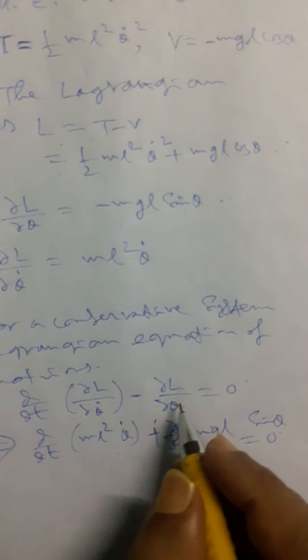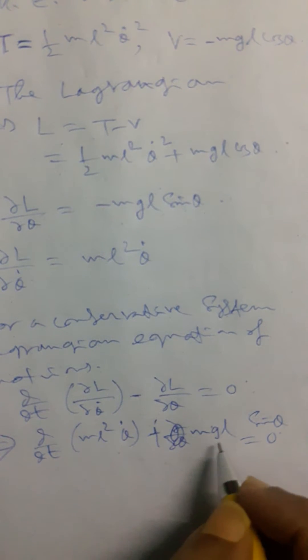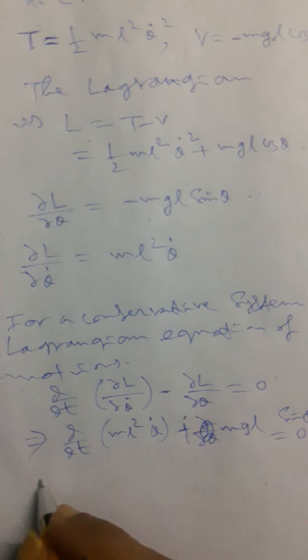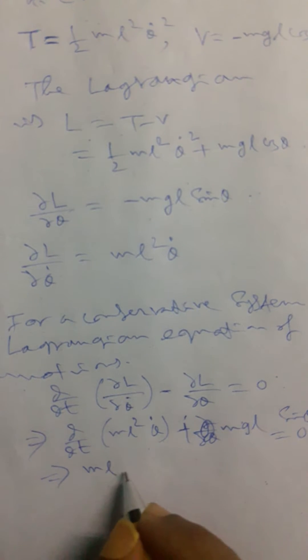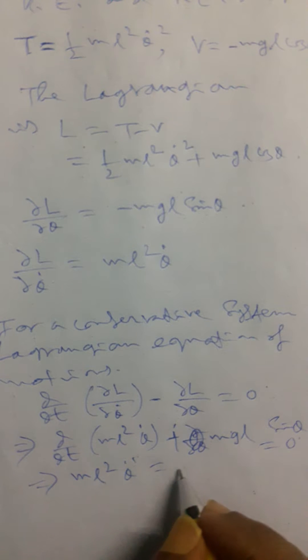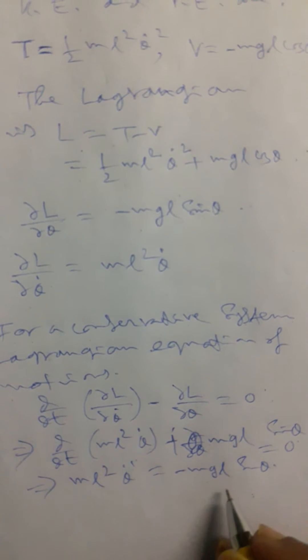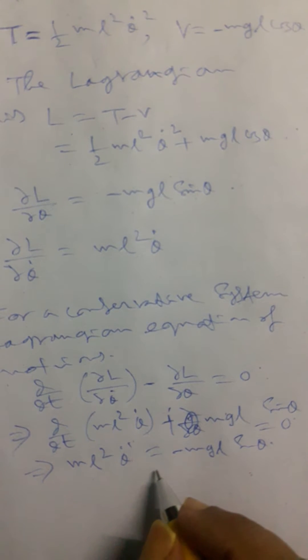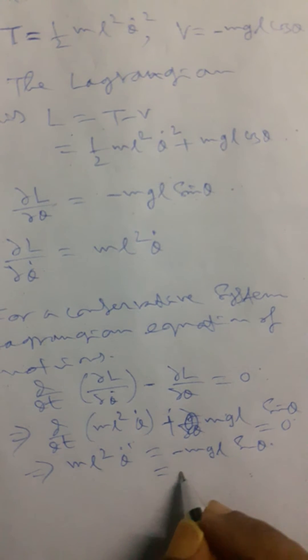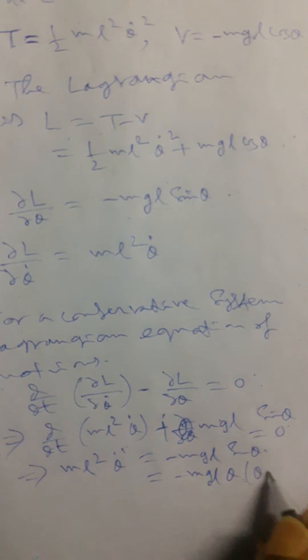And it's obvious and clear that minus ∂L/∂θ, that will be MgL sin θ equals zero. So it's clear ML²θ̈, that will be minus MgL sin θ. And if theta is very small, then sin θ tends to θ, so it will be minus MgL θ when θ is very small.